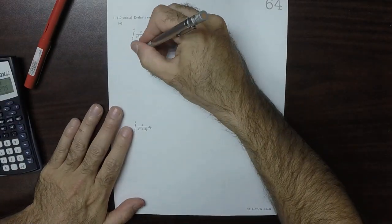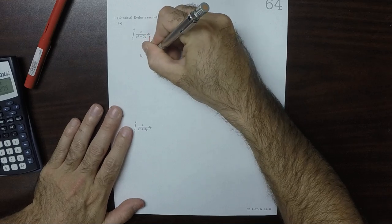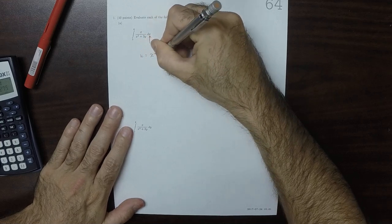So we could take that and say, okay, let's do a substitution. u is x squared plus 3y.